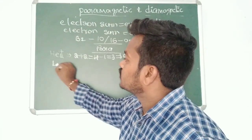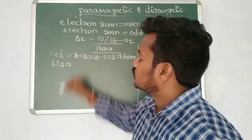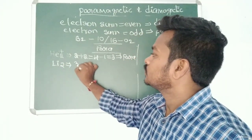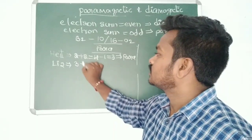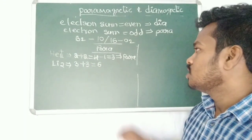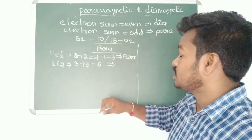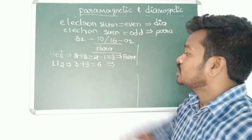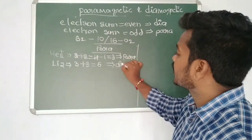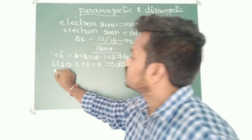Next, Li₂: lithium has atomic number 3, so 3 + 3 = 6 electrons. That is an even number, so Li₂ shows diamagnetic nature.